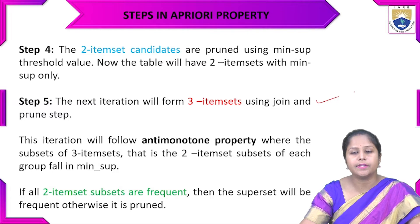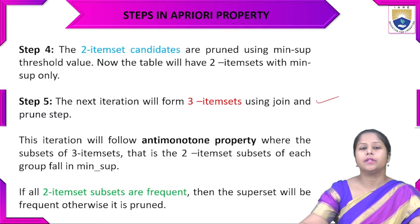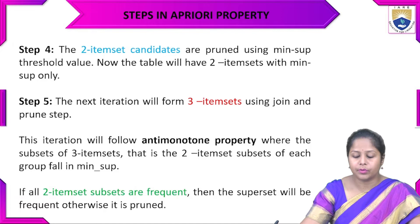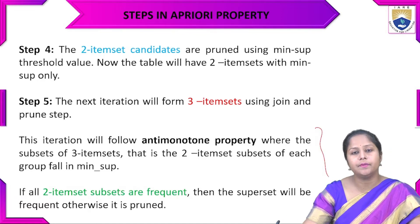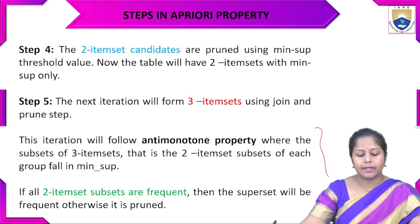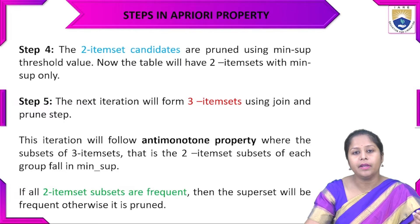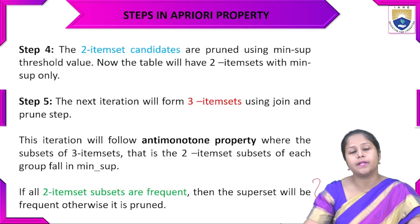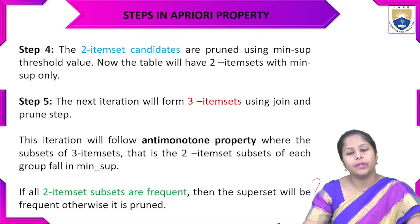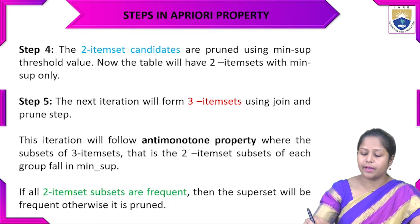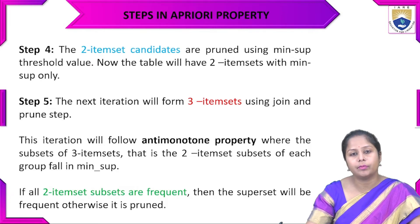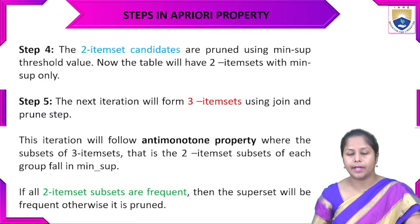In step five, the next iteration generates three-item sets using join and prune. This follows the anti-monotone property: the two-item-set subsets of each three-item group are compared against 50% minimum support. Two-item-set candidates that do not meet this threshold are removed. If all two-item-set subsets are frequent in the transaction, the superset three-item set will also be frequent; otherwise it is removed.